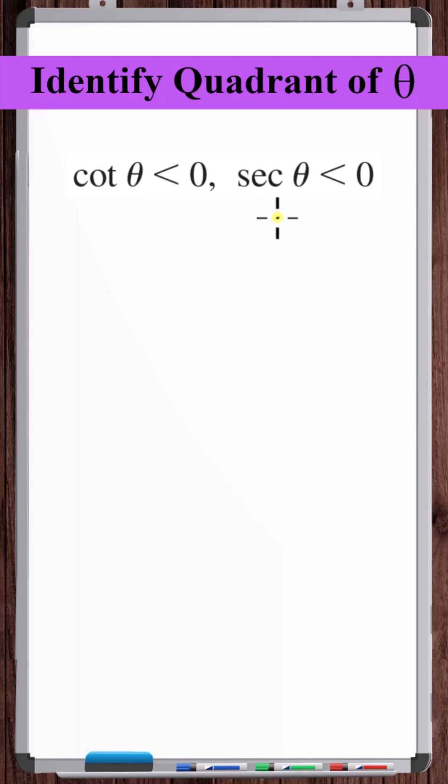What quadrant or quadrants is theta in, given that the cotangent of theta is less than zero and the secant of theta is less than zero?